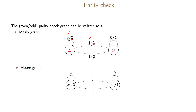Let us look at the Moore graph for the same problem. In the Moore graph our output will only depend on the state that we are in. If we are in state S0, regardless of which input we get, we will output a 0, and if we are in state S1, regardless of the input, we will always output a 1.